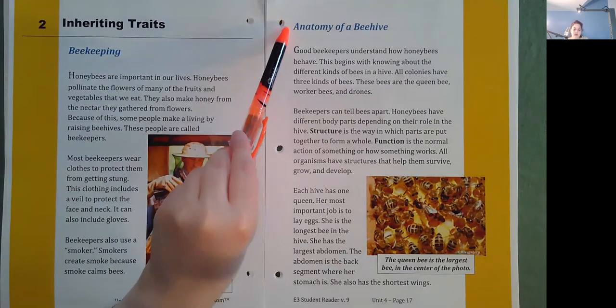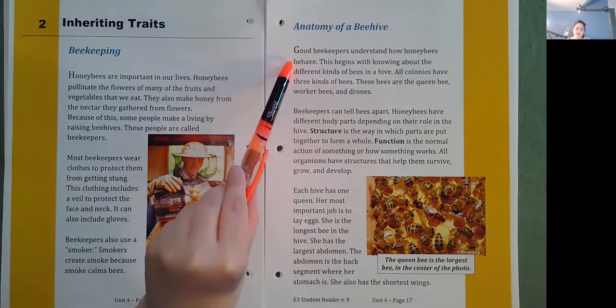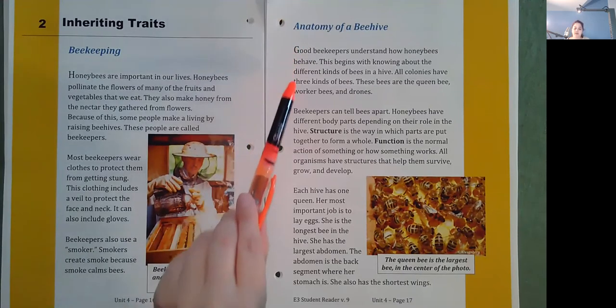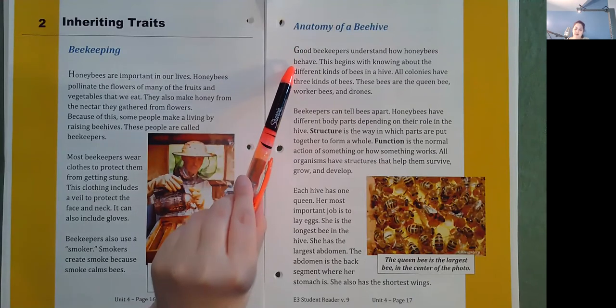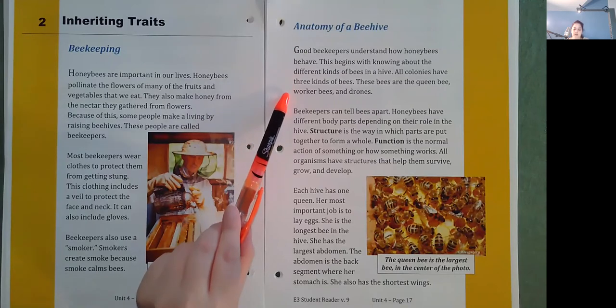Anatomy of a beehive. Good beekeepers understand how honey bees behave. This begins with knowing about the different kinds of bees in a hive. All colonies have three kinds of bees. These bees are the queen bee, worker bee, and drone bees.